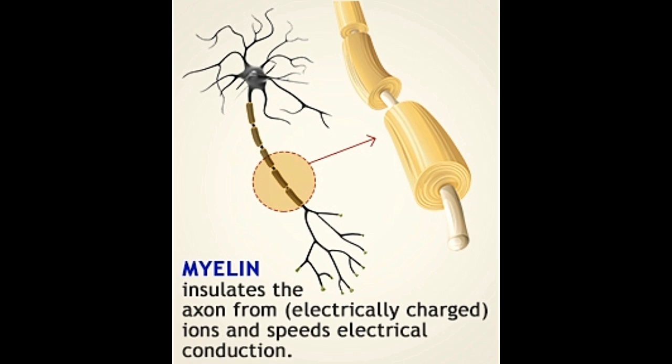Neurons are the most fundamental units of our nervous system. Every tiny action performed by us, like reading this article or scrolling down to read more, is a result of the electrical impulses produced by several neurons.